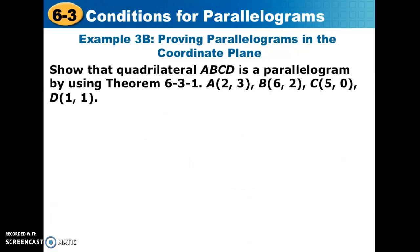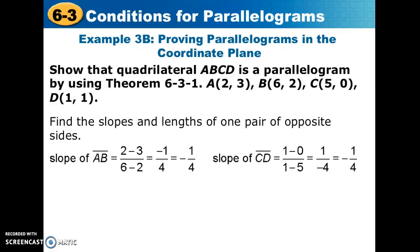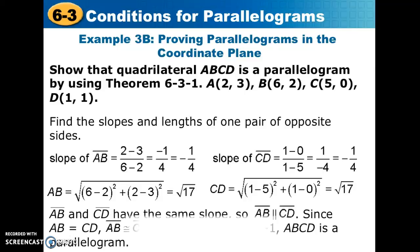In example b, we approach it from a slightly different direction. We calculate the slope of only one pair of opposite sides — AB and CD. They have the same slope, so we know we have one pair of parallel opposite sides. Next, we use the distance formula to calculate the lengths of those segments. When we see that we have congruent opposite sides that are also parallel, we've proved that ABCD is a parallelogram.